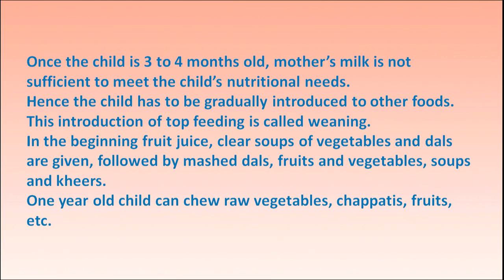Breast milk is important because it is easily and quickly digested, has an ideal nutrient composition, and is at the right temperature for the baby. It provides emotional satisfaction to the mother and security to the child. Once the child is three to four months old, the mother's milk is no longer sufficient to meet nutrient needs, so the child should be gradually introduced to other foods. This introduction to family food is called weaning — also now referred to as complementary feeding.